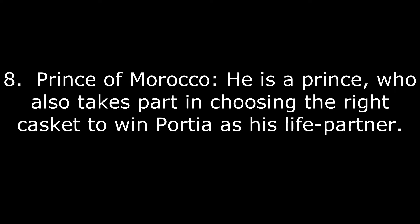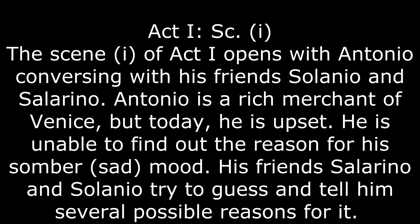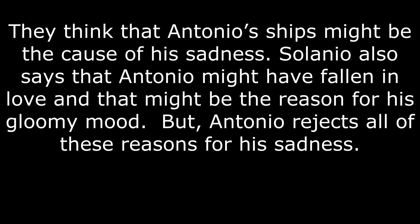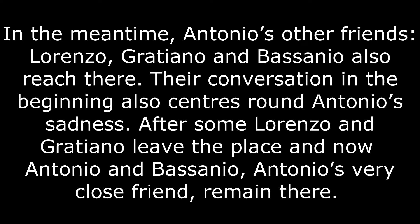Act 1, Scene 1 opens with Antonio conversing with his friends Solanio and Salarino. Antonio is a rich merchant of Venice, but today he is upset. He is unable to find out a reason for his somber mood. His friends Salarino and Solanio try to guess and tell him several possible reasons for his sadness. They think Antonio's ships might be the cause, while Solanio also says Antonio might have fallen in love. But Antonio rejects all these reasons. In the meantime, Antonio's other friends Lorenzo, Graziano, and Bassanio also reach there, and their conversation also centers around Antonio's sadness.